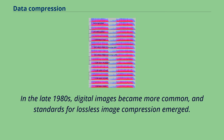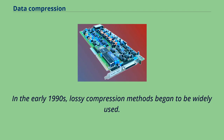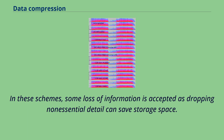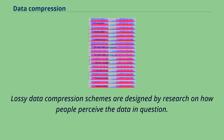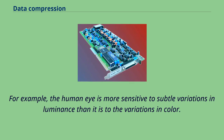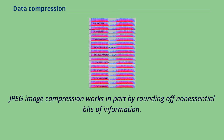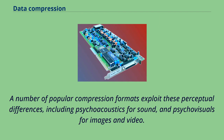In the late 1980s, digital images became more common and standards for lossless image compression emerged. In the early 1990s, lossy compression methods began to be widely used. In these schemes, some loss of information is accepted as dropping non-essential detail can save storage space, with a corresponding trade-off between preserving information and reducing size. Lossy data compression schemes are designed by research on how people perceive the data in question. For example, the human eye is more sensitive to subtle variations in luminance than to variations in color. JPEG image compression works in part by rounding off non-essential bits of information. A number of popular compression formats exploit these perceptual differences, including psychoacoustics for sound and psychovisuals for images and video.